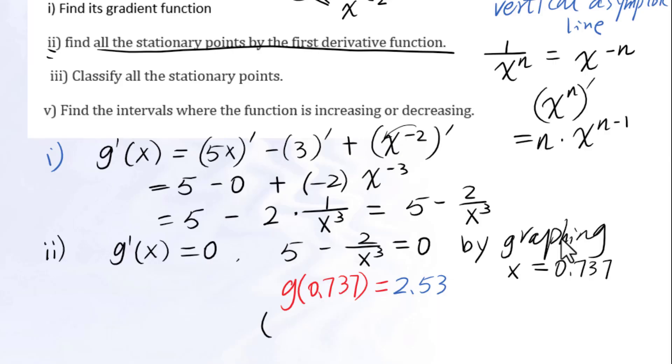We have only one stationary point for this function: 0.737, 2.53. Three, classify all the stationary points.